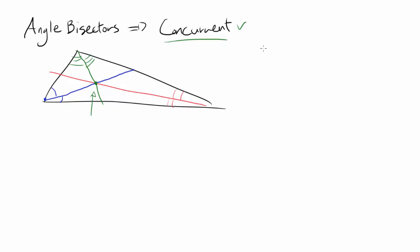You may say, do they have to be concurrent? Let's draw three random lines. Are they concurrent in this case? No, they are not. Are these concurrent? Yes, because they share a common point.